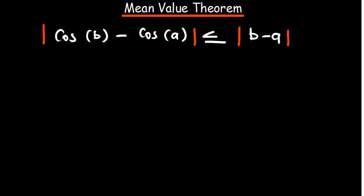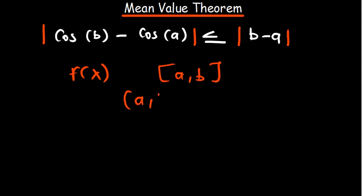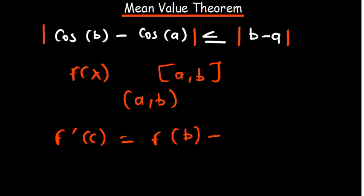We want to prove using the Mean Value Theorem that the left hand side is equivalent to the right hand side. A quick recap on the Mean Value Theorem: given that a function f(x) is continuous on a closed interval [a, b] and differentiable on the open interval (a, b), then there exists a point c such that f'(c) equals f(b) minus f(a) divided by b minus a.